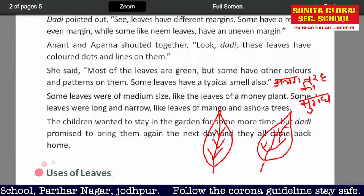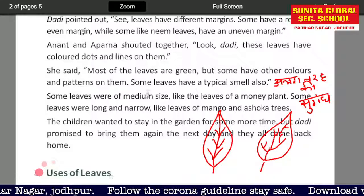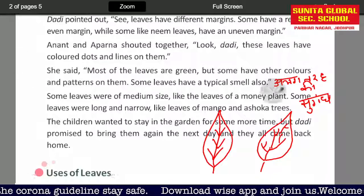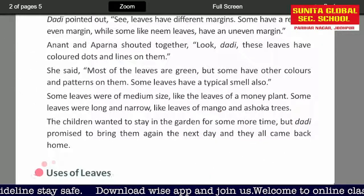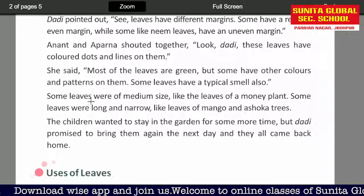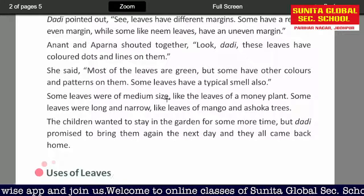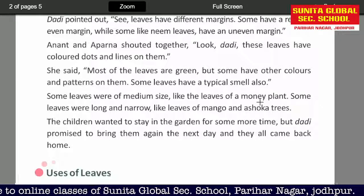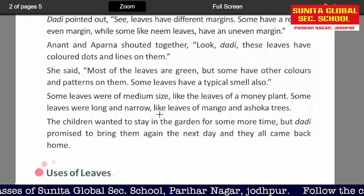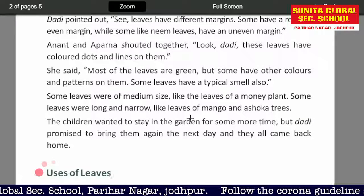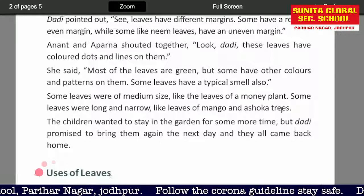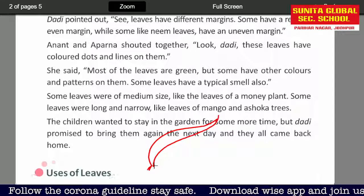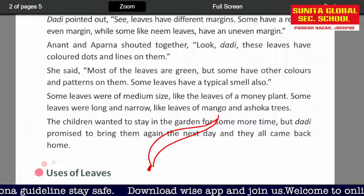Dadi said some leaves were of a medium size — not too long, not too small — like the leaves of a money plant. Some leaves were long and narrow. Narrow means sankri, meaning thin. Like the leaves of an ashok tree or mango tree.